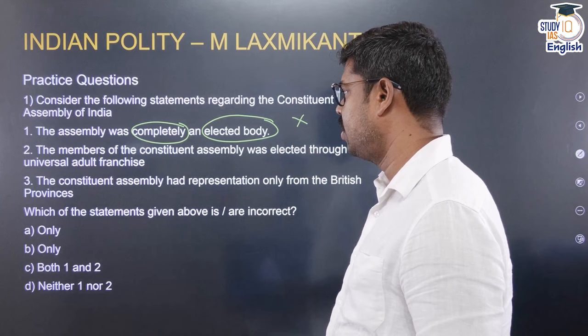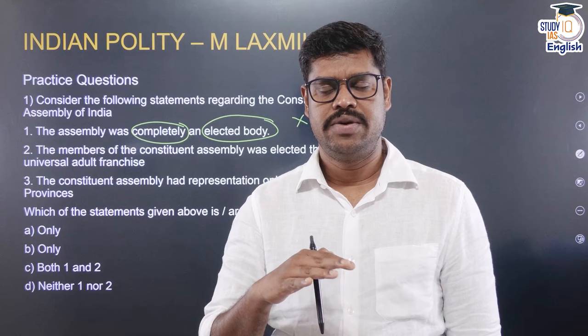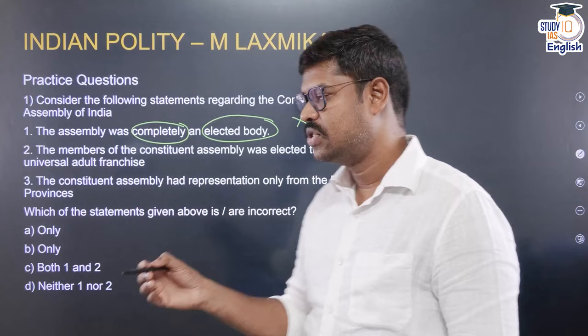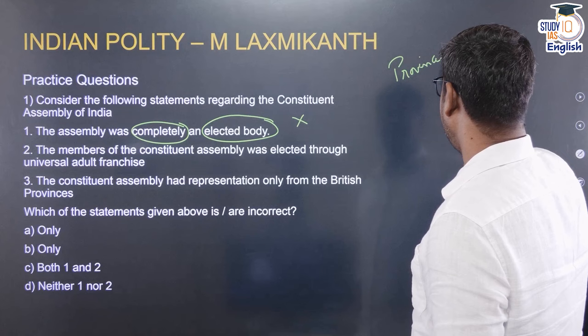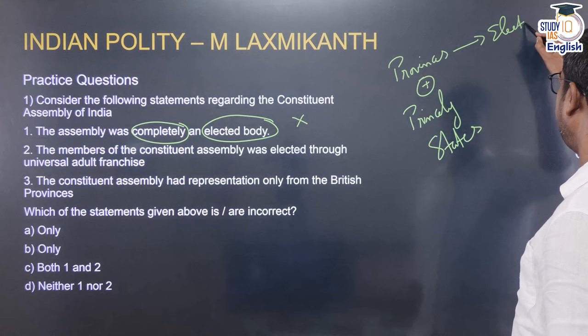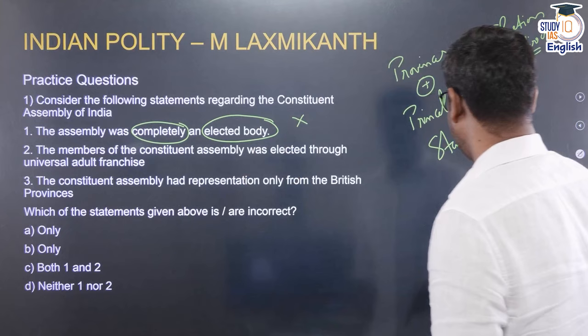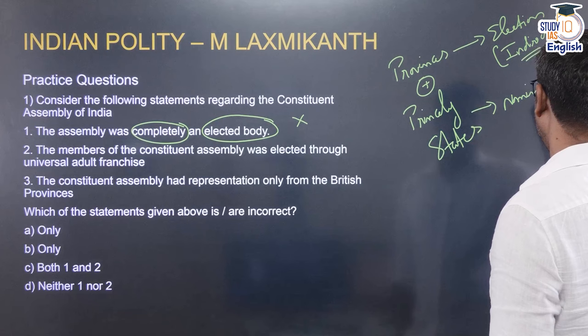Statement 2: The members of the Constituent Assembly were elected through Universal Adult Franchise. In fact, the members of the Constituent Assembly were elected indirectly — they were not elected by Universal Adult Franchise. The members came from both the provinces and the princely states. From the provinces, it was through an indirect election — they were elected by the elected members of the legislative assemblies in those provinces. In the princely states, it was by way of nomination. Nobody was elected by Universal Adult Franchise. So this statement is also wrong.